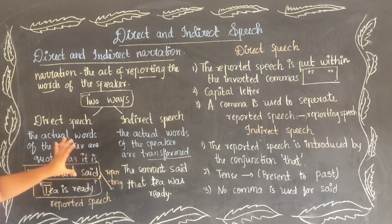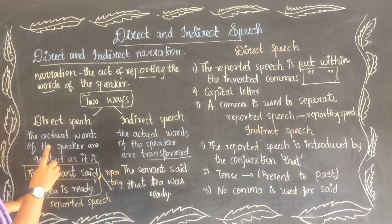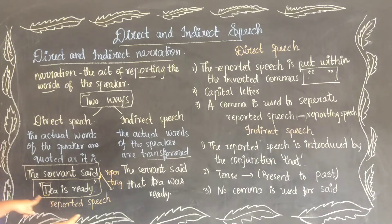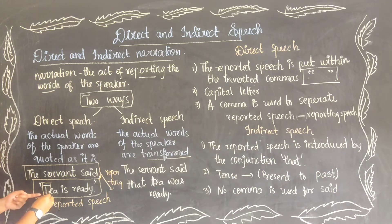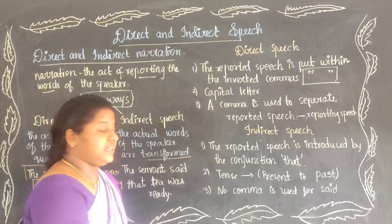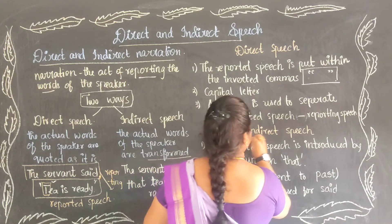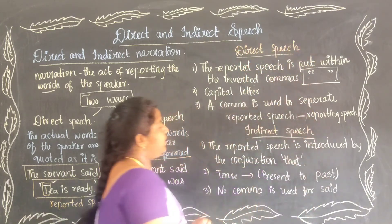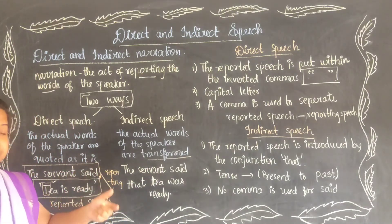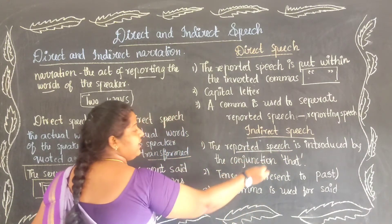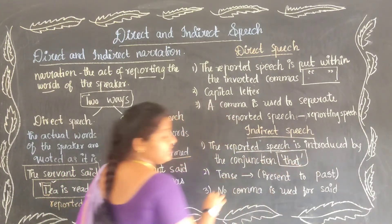This is the direct speech. The reported speech is put within the inverted commas, the reported speech always begins with a capital letter, and the comma separates the reporting speech and the reported speech. In indirect speech, the reported speech is introduced by the conjunction 'that'.